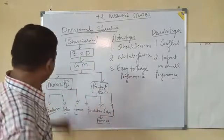The second disadvantage is impact on overall performance. Suppose B is doing well but A is not doing well. Because of the bad performance of one department, the other department's performance gets neutralized. For example, if A is doing a sale of 100 and B is doing a sale of 20, the total performance of the company becomes 120. This is the disadvantage of divisional structure, and that concludes the discussion of both divisional and functional structure.